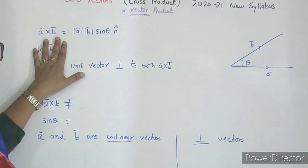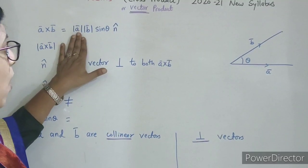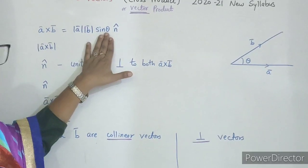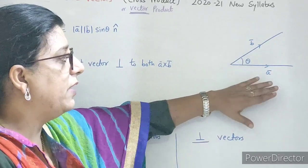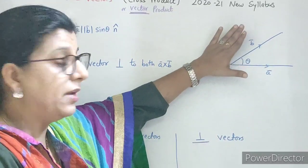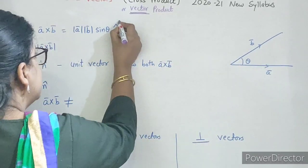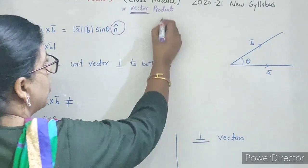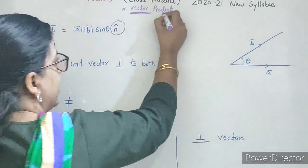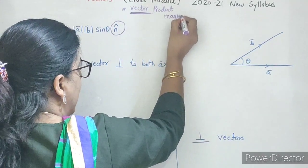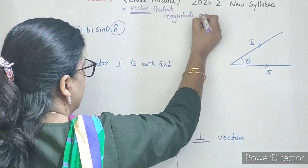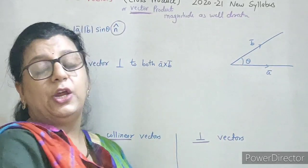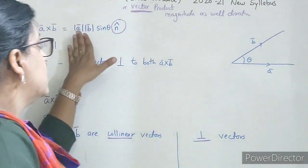Now, A cross B is equals to mod of A, mod of B, sin theta, where theta is the angle between vector A and vector B. This n̂ represents direction because cross product is a vector quantity — it has both magnitude as well as direction.